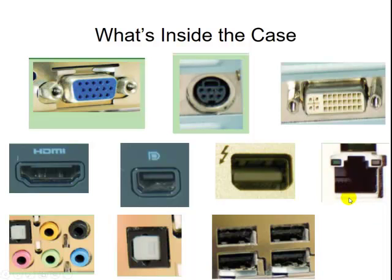Next you'll see something hopefully all of you have seen — the network port. We also call this an Ethernet port or an RJ45 port, because that is the connector on the cable that goes into this port. We use this on Ethernet cables, and most people are now using CAT6 cabling. This allows us to connect to wired networks and get on the internet. When troubleshooting, if the lights aren't on, that's a good indicator that the cable, port, or connection may be the reason you can't access the internet or company network.